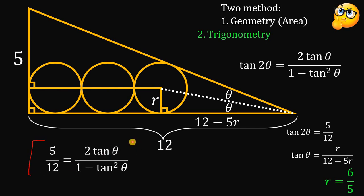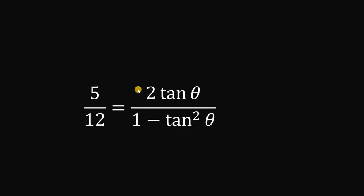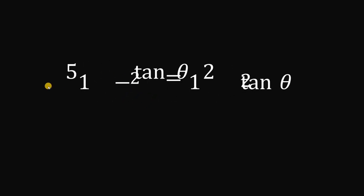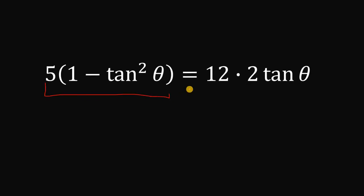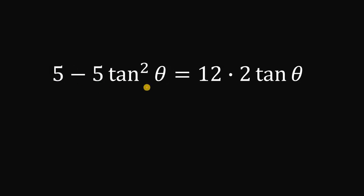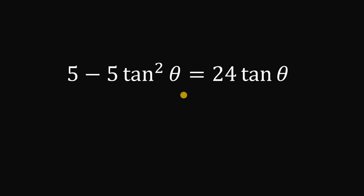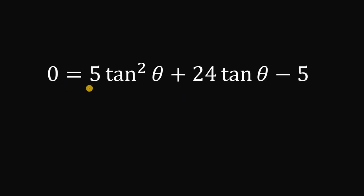Since tan(2θ) = 5/12, we substitute into the double-angle identity. Cross-multiplying gives: 5(1 − tan²θ) = 12 · 2·tanθ. Distributing: 5 − 5·tan²θ = 24·tanθ. Rearranging and setting equal to zero: 5·tan²θ + 24·tanθ − 5 = 0.